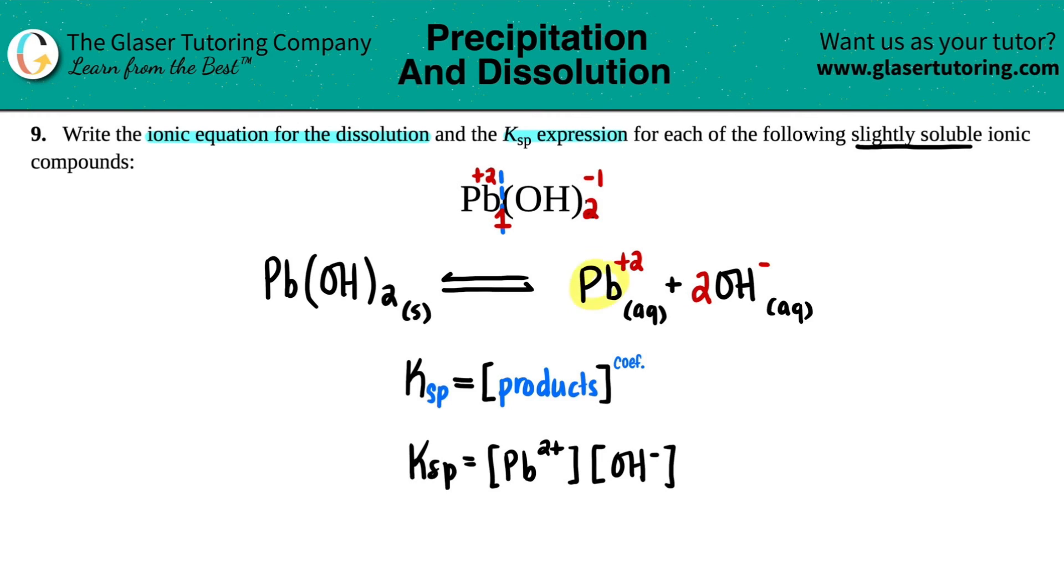For the lead, there was nothing here. So that means that it was one. So I could raise it to the first or I could leave it alone. But for the hydroxide, there's two OHs. So I have to raise the OH concentration to the second power. And now, this is the Ksp expression.